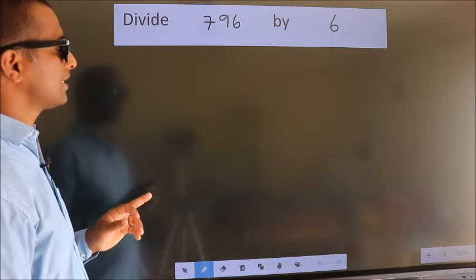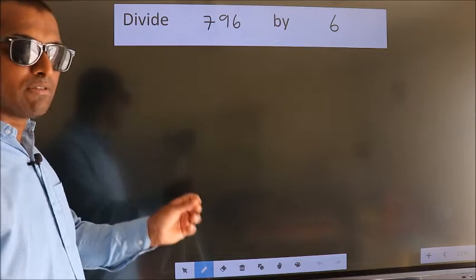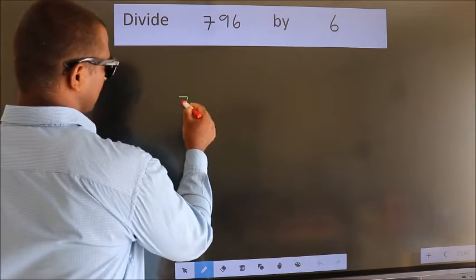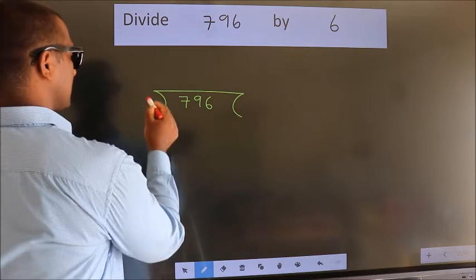Divide 796 by 6. To do this division, we should frame it in this way. 796 here, 6 here.